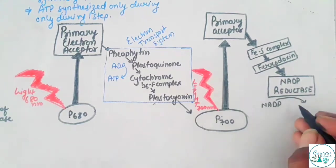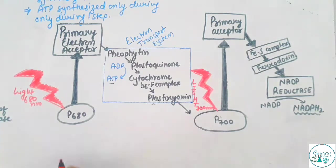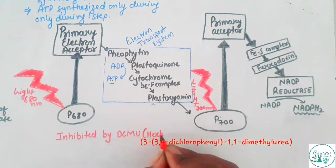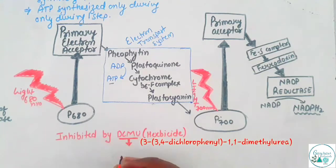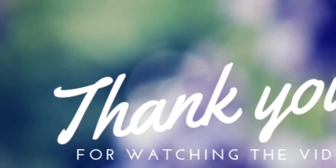Now we have ATP and NADPH2 which we would use in the dark phase of photosynthesis. This non-cyclic photophosphorylation is inhibited by DCMU, which is a herbicide and a strong inhibitor of Photosystem 2. You can pause the video and write down the differences between cyclic and non-cyclic photophosphorylation. I hope you would have understood the video — do like, share, and subscribe to my channel. Thank you very much, may God bless you all.